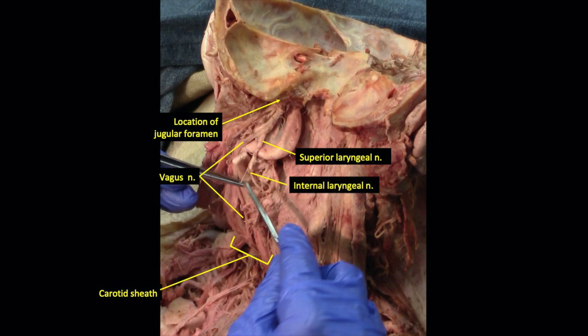The superior laryngeal nerve gives rise to the internal laryngeal nerve, which becomes sensory above the vocal cords, and a much more delicate nerve, the external laryngeal nerve, which is motor to one muscle, the cricothyroid.